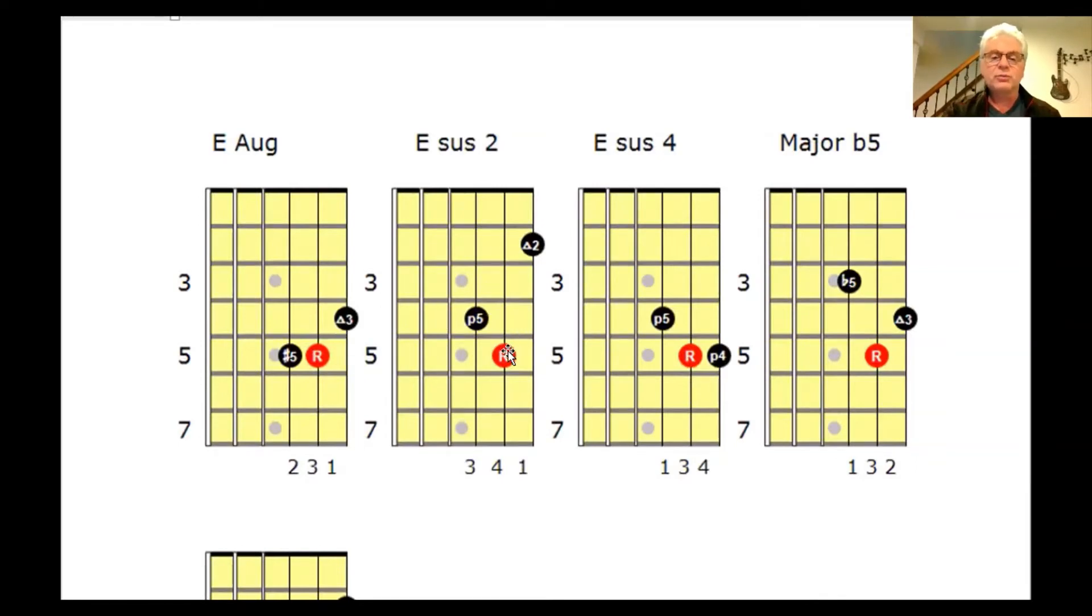And E sus2. We start with the five again, and we go to our root, and we bring our note down to the second note, which is F sharp in this key. And we use fingers three, four, one. And E sus4. Start with our fifth which is B, our root which is E, and then we would go to our fourth which is A. We could use our first, third, and fourth finger for that shape.